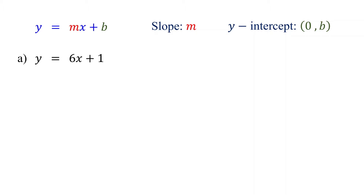The coefficient of x is 6, so the slope is 6. b is 1, so the y-intercept is (0, 1). This is where the line crosses the y-axis.